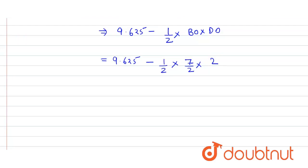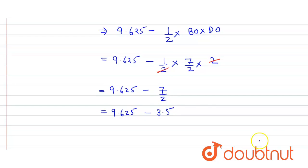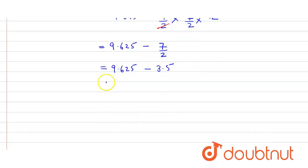Since DO is given as 2 cm, the 2 cancels, and we get 9.625 minus 7 divided by 2, which equals 9.625 minus 3.5. Subtracting gives us 6.125 centimeters squared, and that is our answer.